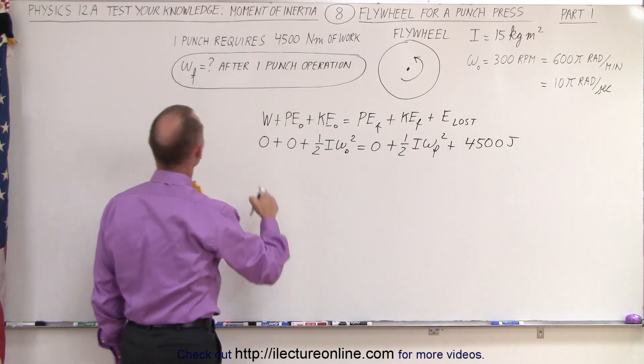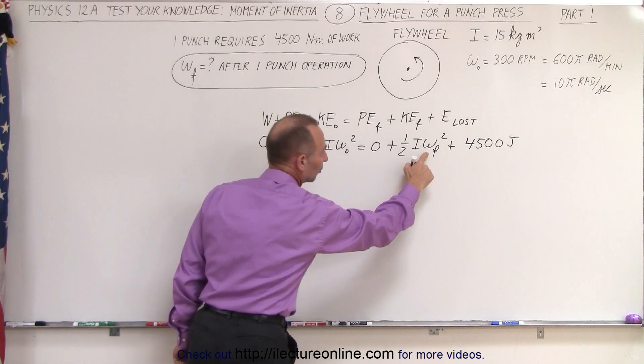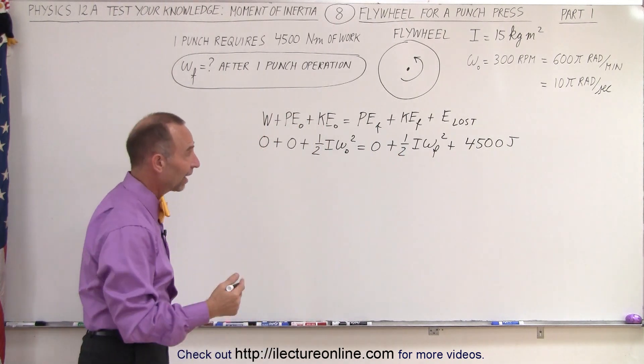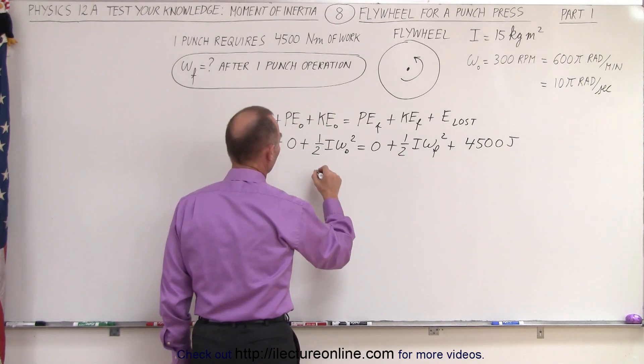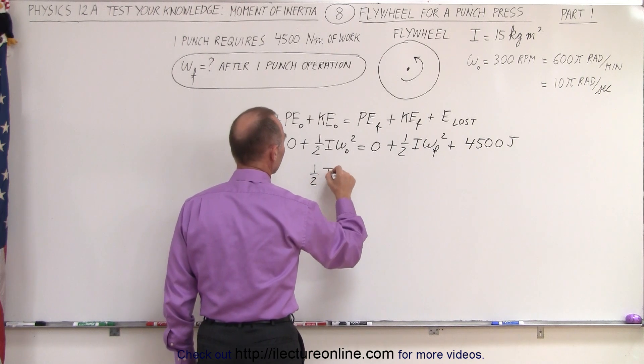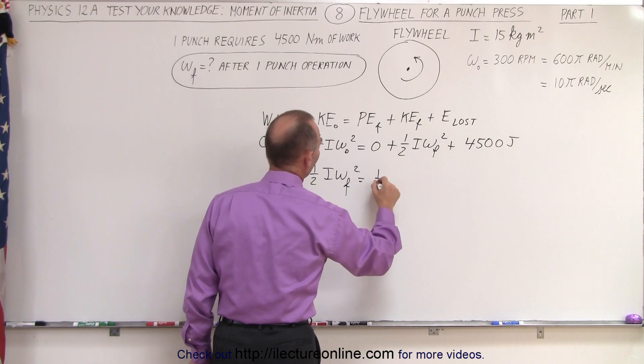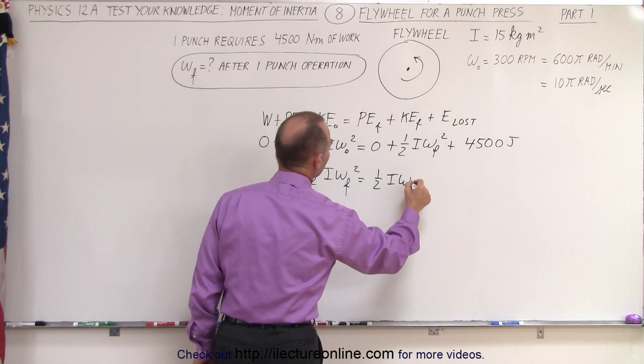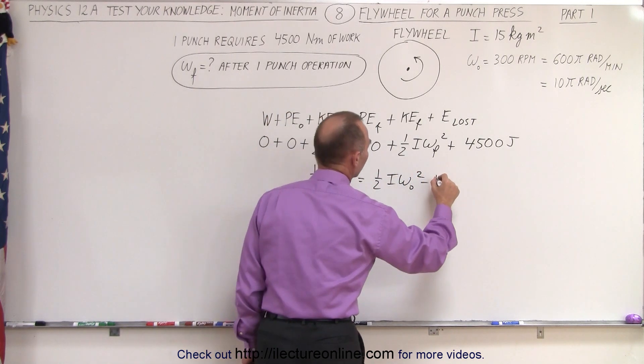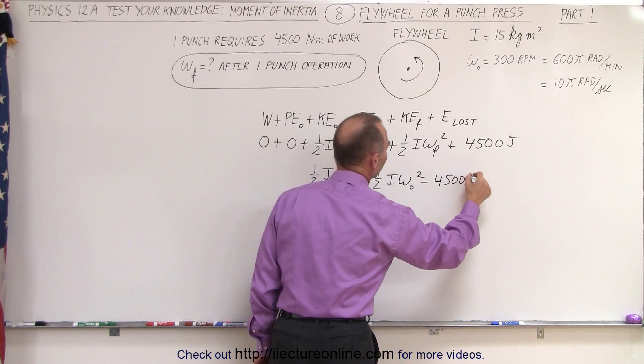So now what we're looking for is we're looking for ω final, which is this right here. So let's isolate that equation. So I end up with one-half I ω final squared equals one-half I ω initial squared minus the 4,500 joules required for the punch.